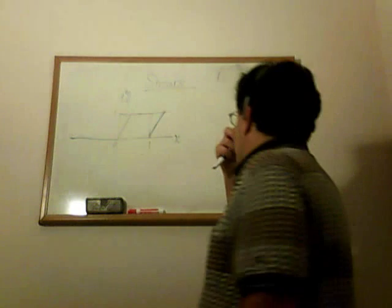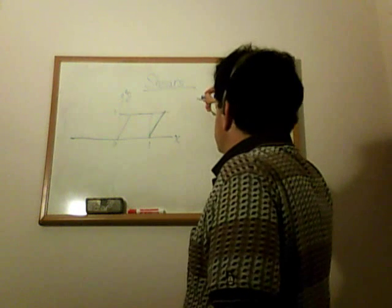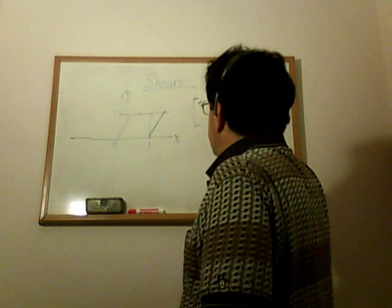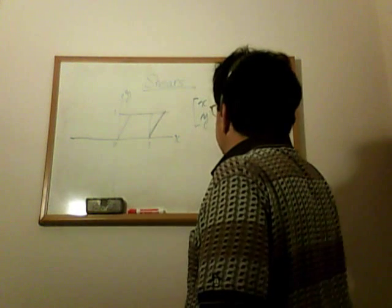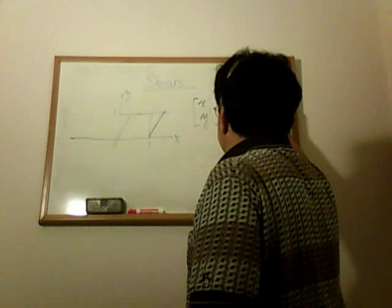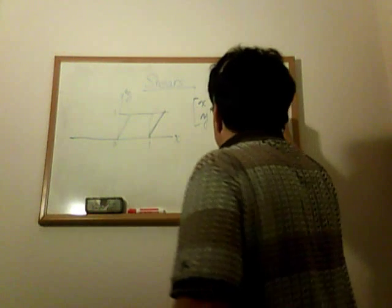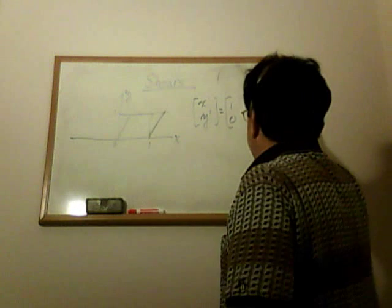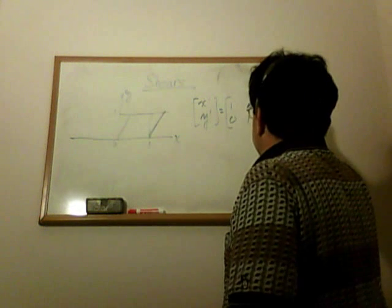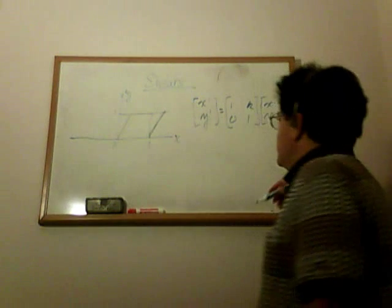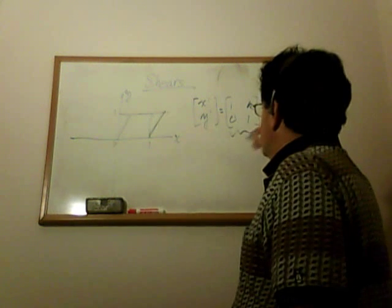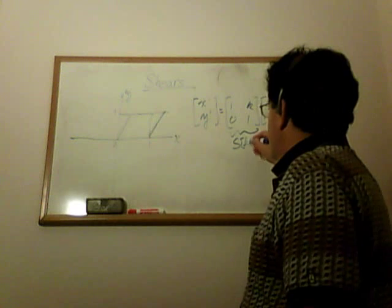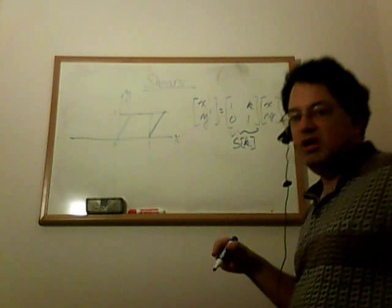So what that looks like as a matrix is you have XY, X prime, Y prime, equals [[1, K], [0, 1]] times XY, where K is some real number. K could be positive or negative. This is what I call SX(K). This is a shear with parameter K.